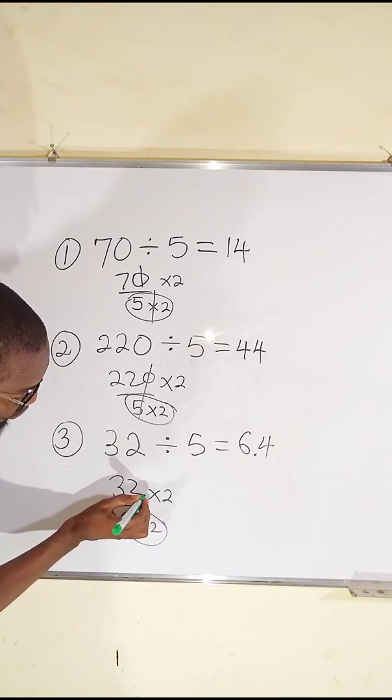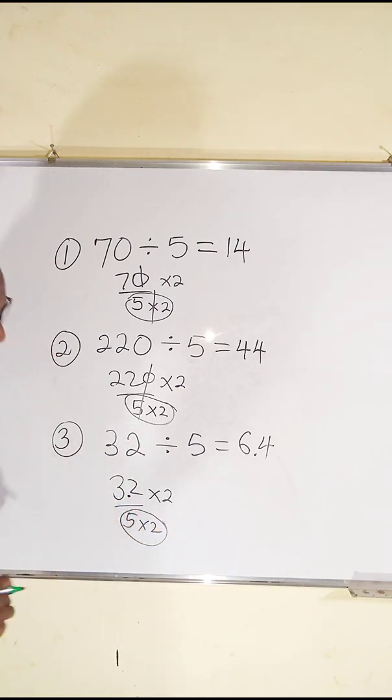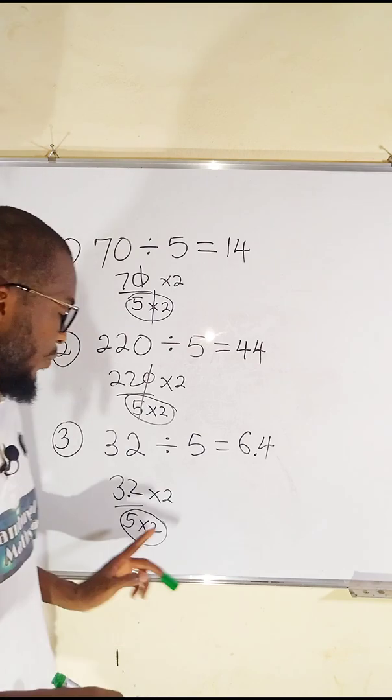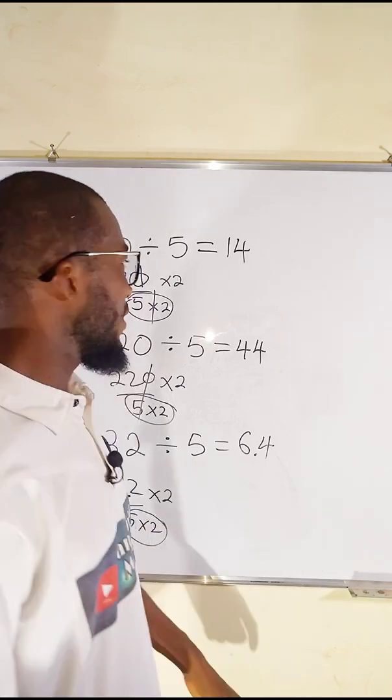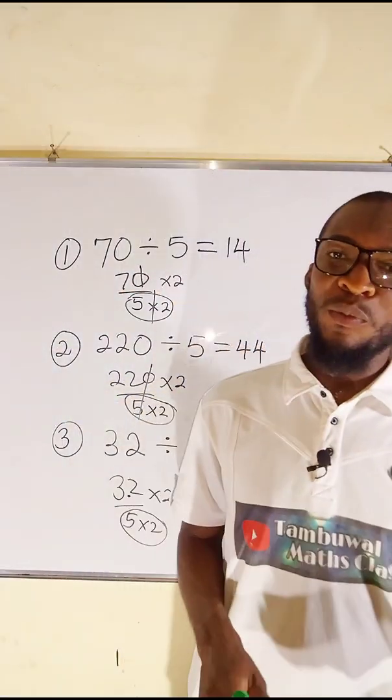So we have a decimal point here naturally, so we bring it backward here. It becomes 3.2, and 3.2 times 2 is 6.4. You see, this is just the secret behind division of numbers by 5.